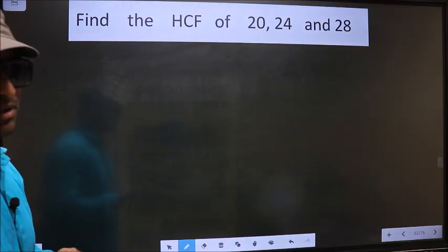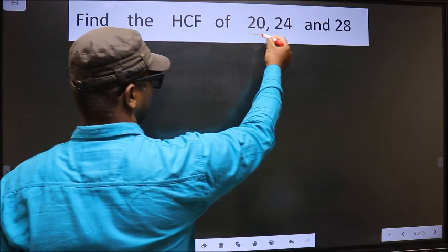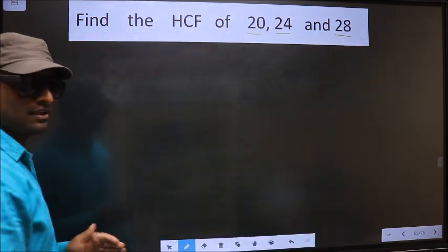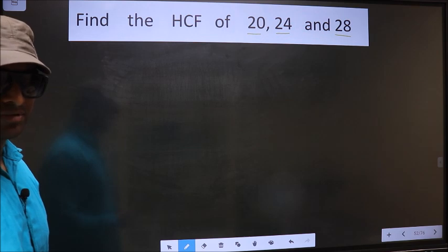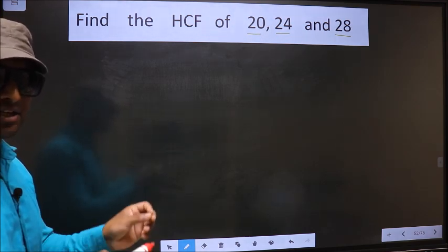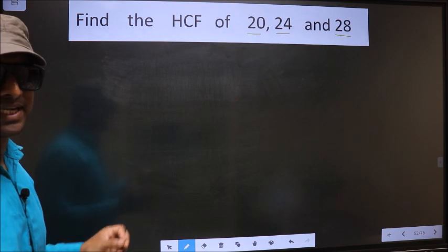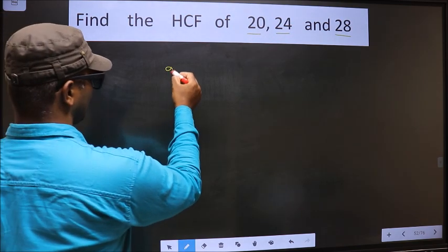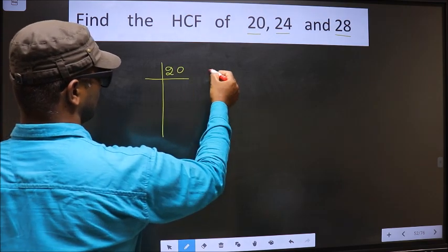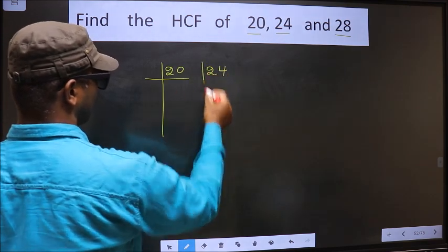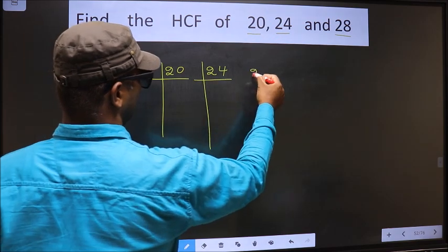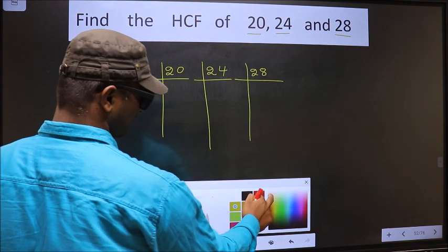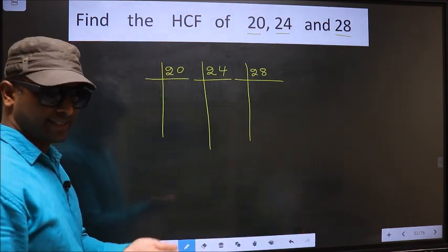Find the HCF of 20, 24 and 28. To find the HCF, first we should do the prime factorization of each number separately. That is, 20, 24, 28. Okay, next.